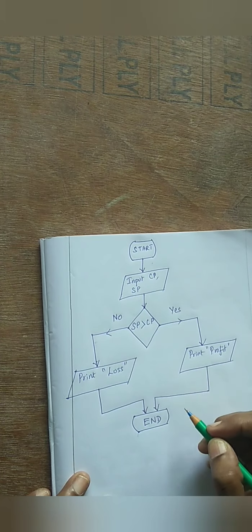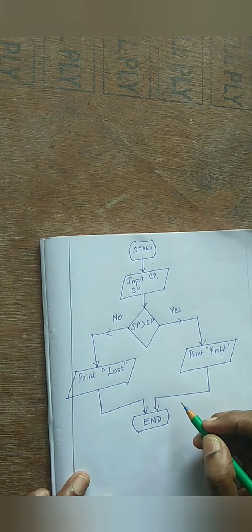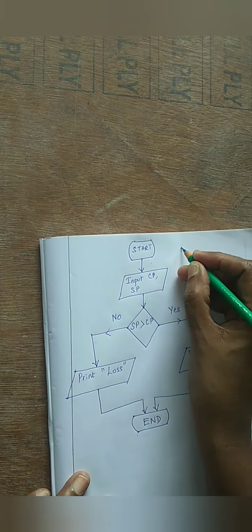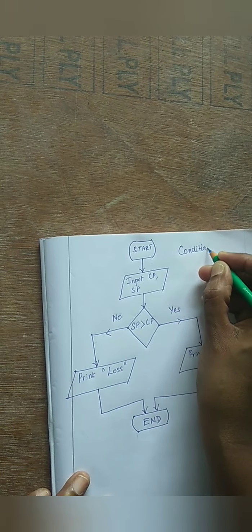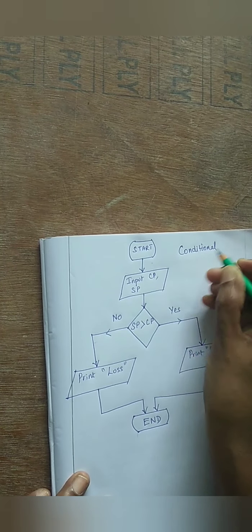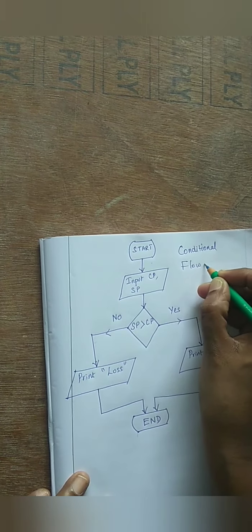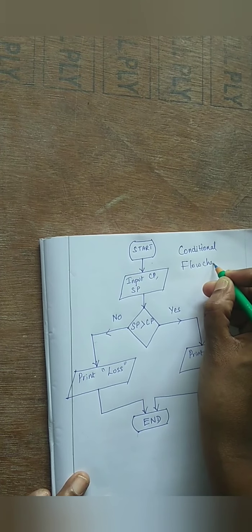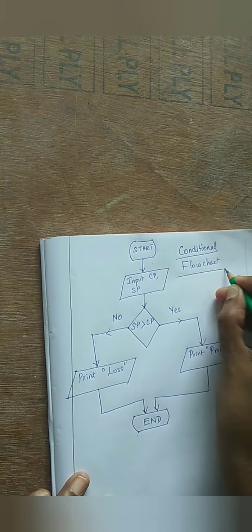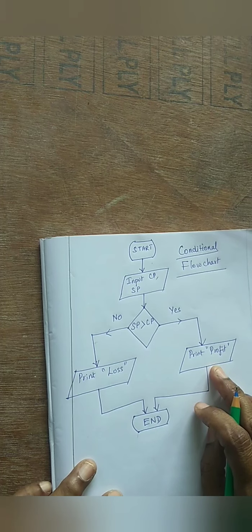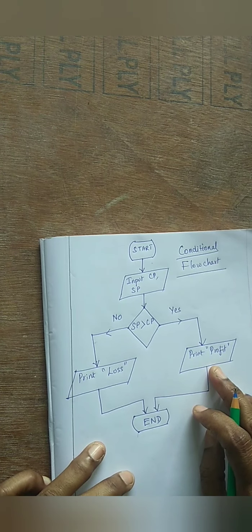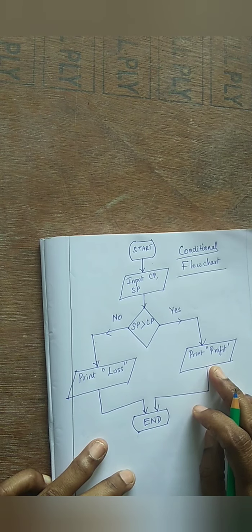After printing, the process comes to an end. I end the process with the oval shape. When the condition is selling price greater than CP - if yes, print profit; if no, print loss. This comes under the conditional flowchart because we are checking some condition. Hope you understood all the problems, students. Thank you. God bless you.